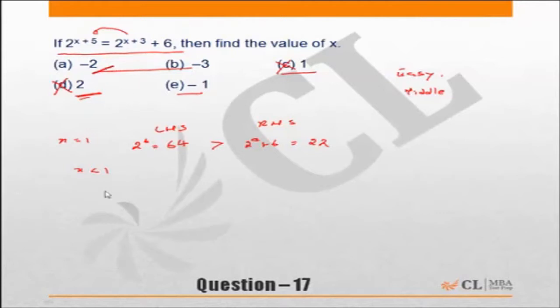If I take x equal to minus 2 in the second iteration, left hand side becomes 2^3, which is nothing but 8. And right hand side becomes... this is x is minus 2, so 3 minus 2 is 1. 2^1 plus 6.